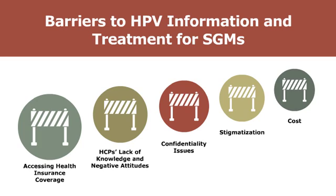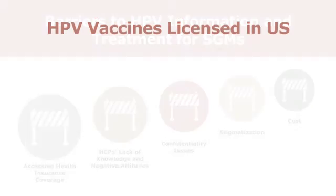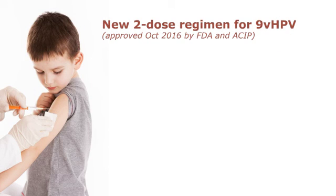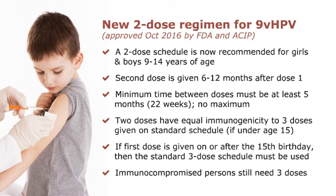During its February 2015 meeting, the Advisory Committee on Immunization Practices, or ACIP, recommended the 9-valent HPV vaccine as one of three HPV vaccines that can be used for routine vaccination. Additionally, in October 2016, the Food and Drug Administration and ACIP approved a two-dose regimen for 9-valent HPV for girls and boys 9 to 14 years of age. Compared with the three-dose regimen in young women 16 to 26 years of age, the two-dose regimen generates non-inferior anti-HPV 6, 11, 16, 18, 31, 33, 45, 52, and 58 antibody responses. The second dose is given at 6 or 12 months following the first dose with a plus or minus 4-week window.